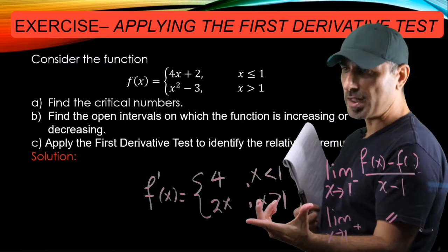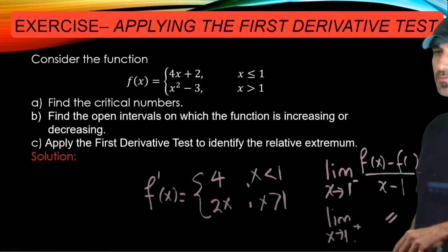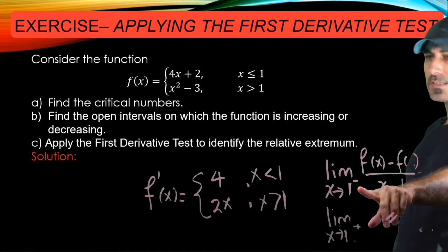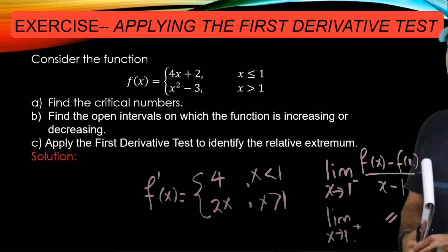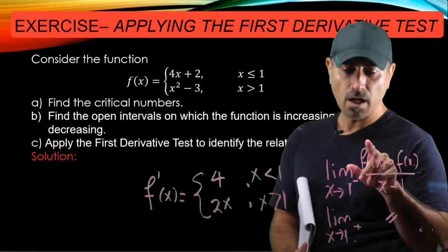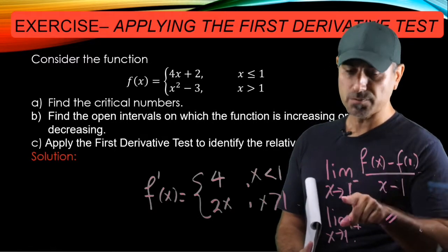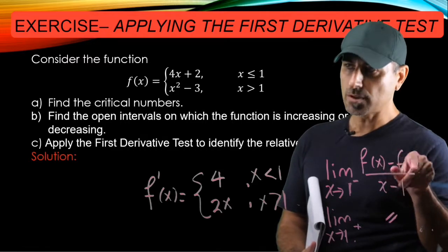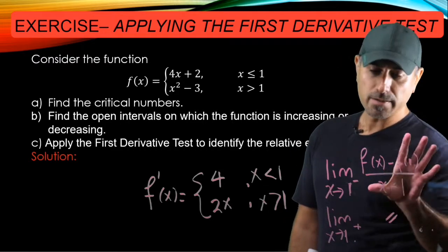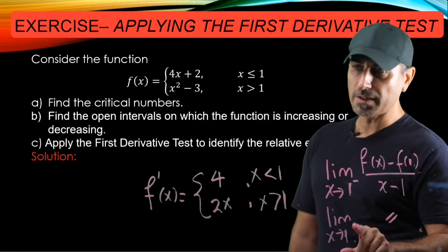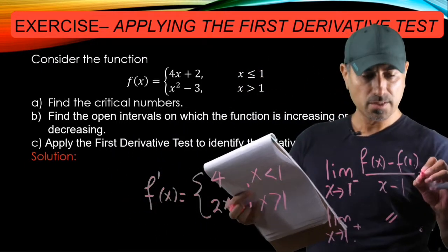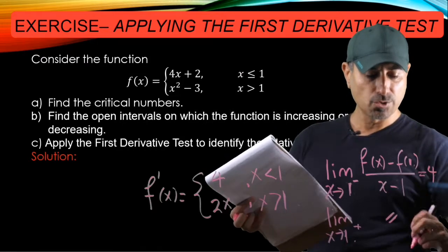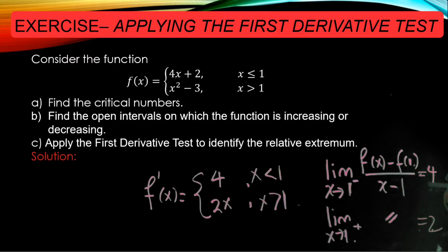So the question is: what's going on at x equals one? We can check the limit definition of the derivative at x equals one by checking the left and right limits for these quotients. This is a good exercise — you should plug in the left piece since we're approaching one from the left, and also use f(1) which is six. You should get the left limit equal to four and the right limit equal to two. Since they are not equal, f prime is not defined at x equals one.